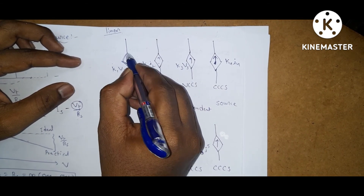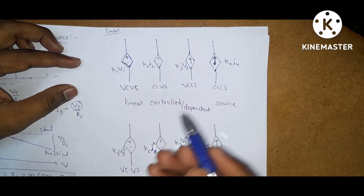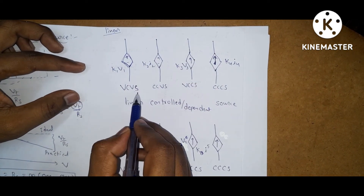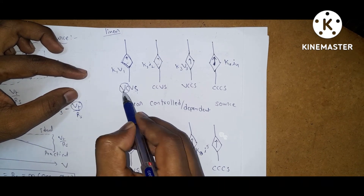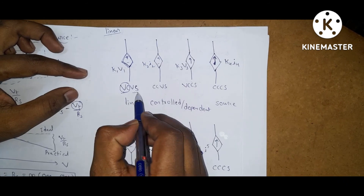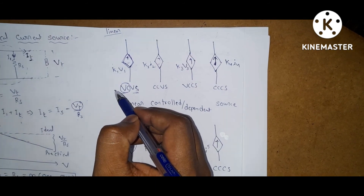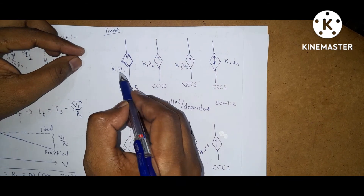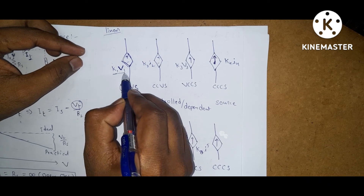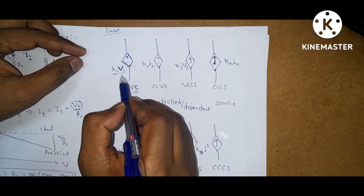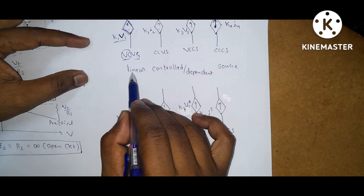Control sources are represented with a rectangle box. Inside the box we represent either current source or voltage source polarity. For a voltage control voltage source, the control variable is voltage and the source is a voltage source. If the control variable varies linearly — multiplied by a constant — it is called a linear voltage control voltage source, which is a linear dependent source.